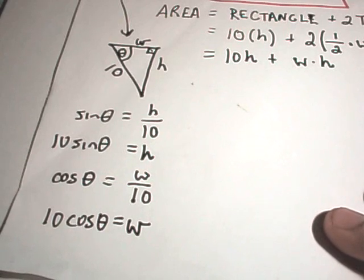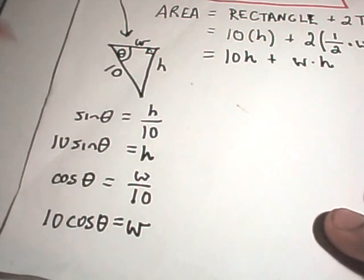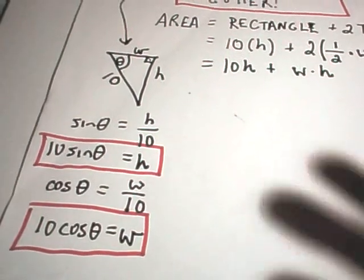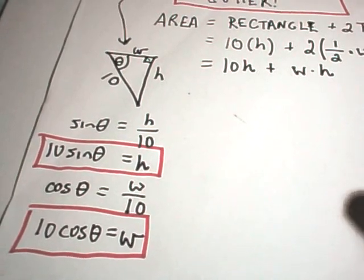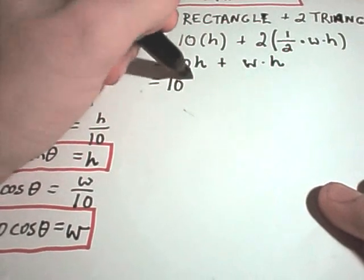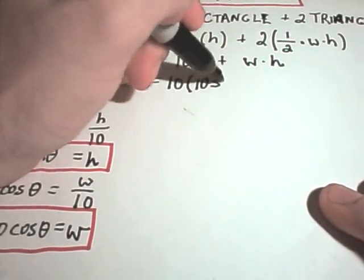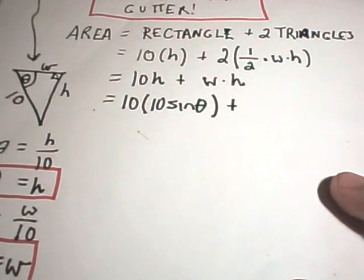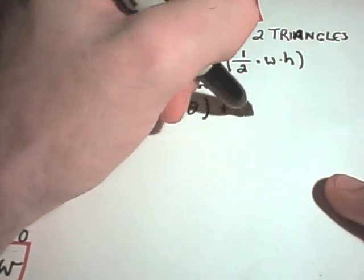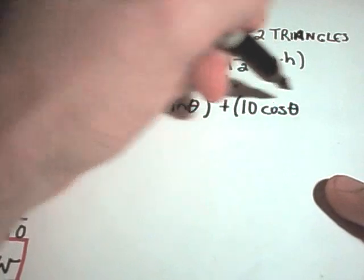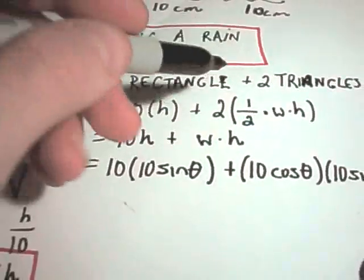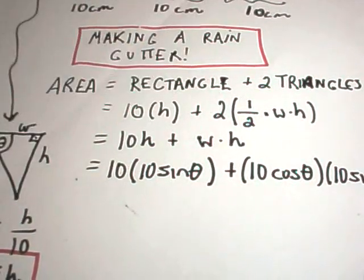So now I have expressions for the height and the width that I can plug into my area formula, and that's what I'm trying to maximize in this problem. Alright, so let's plug that stuff in. If I plug the h value in, I'll have 10 times sine theta, and now I've got to plug in the width and the height. We said the width is 10 cosine theta, and the height is 10 sine theta. Obviously, the other triangle is symmetric, it's going to be the same thing, and I've already accounted for the fact that I have two of those triangles in my formula.